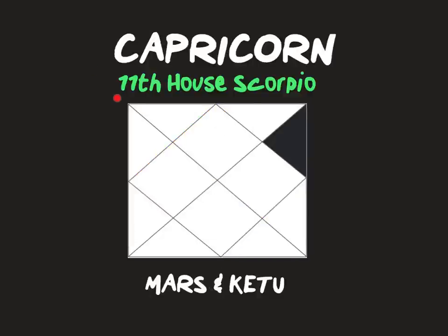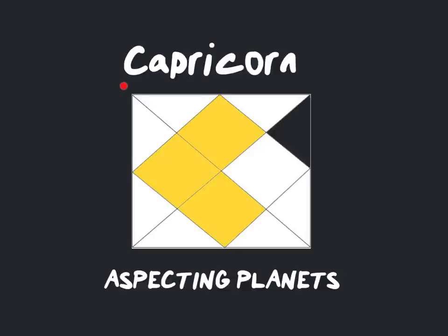For Capricorn ascendant, the 11th house Scorpio is your Baddaka house. Take note of planets in Scorpio — they have a Baddaka effect. Mars and Ketu are the Baddakaisha, lords of Scorpio. Where is Mars? Where is Ketu? Note those houses carefully — Baddakaisha obstruction comes into that house. Any planets in conjunction to either Mars or Ketu also have a Baddaka effect. Take note of planets aspecting by sign aspect to your 11th house: planets in Capricorn, Aries, and Cancer all aspect this house and also have a Baddaka effect.